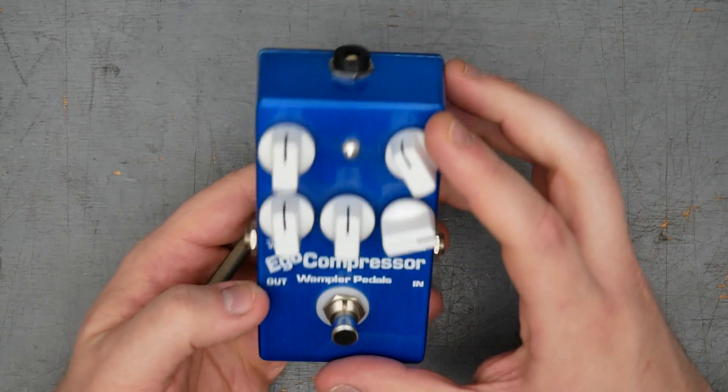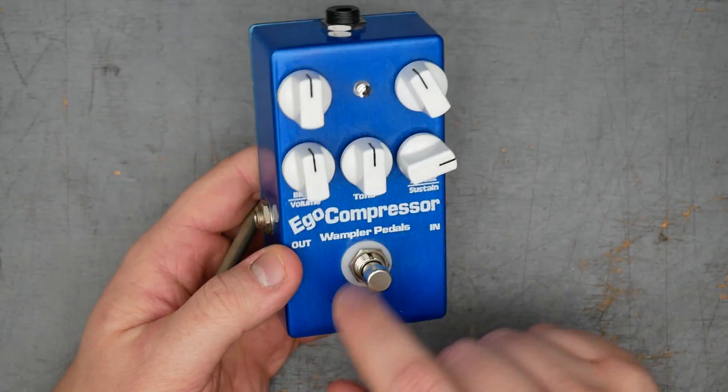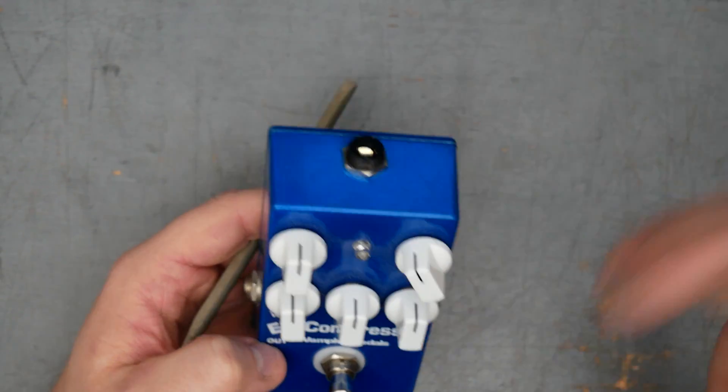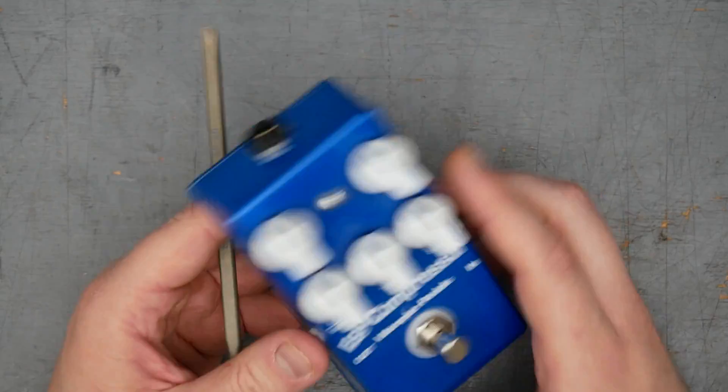Nothing on the back, nothing on the front and the bottom, just a standard logo. Wampler pedals out and in, and a standard external nut DC jack here makes it easier to disassemble and repair. That's it for the externals. Let's go ahead and crack it open.